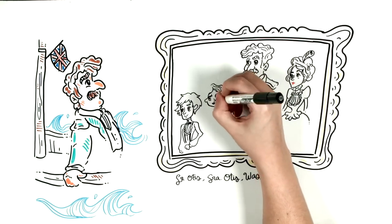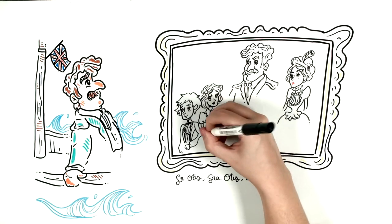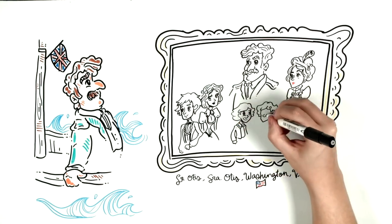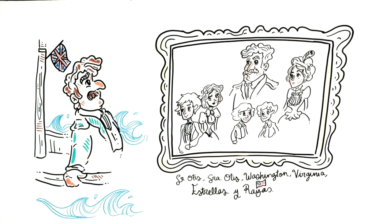Then there's Virginia, a fifteen-year-old girl with a charming look and big blue eyes. Finally there are Stars and Stripes, the noisy twins of the family. Their names come from the United States flag.